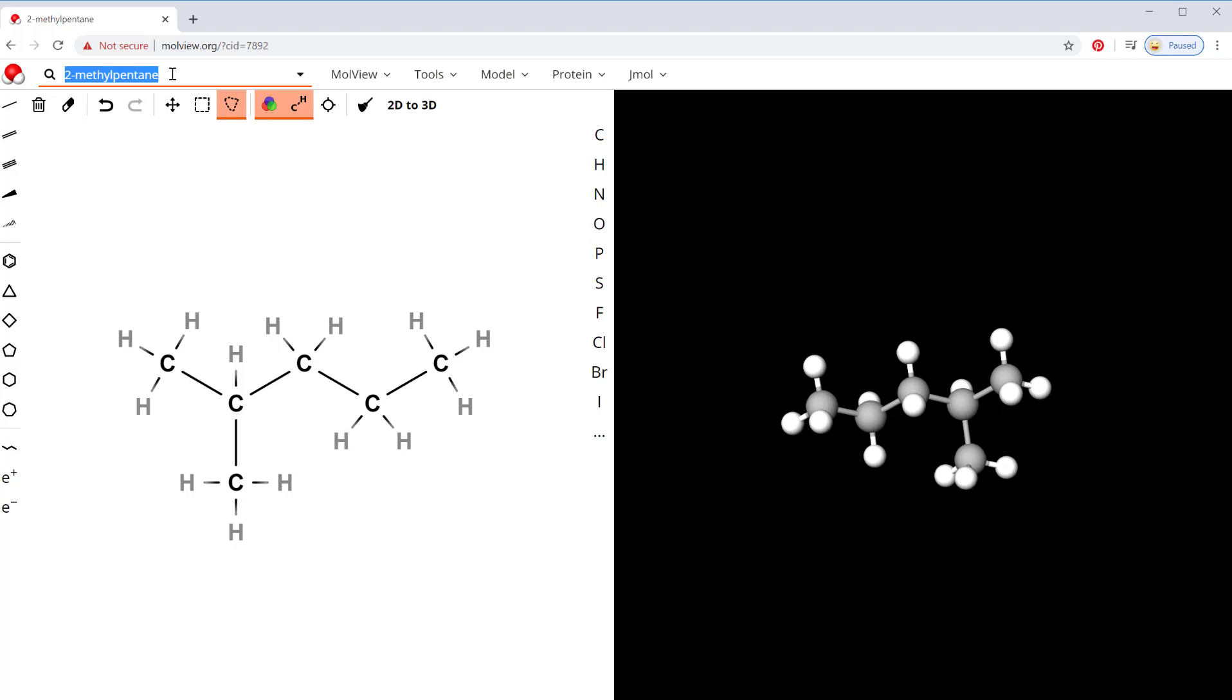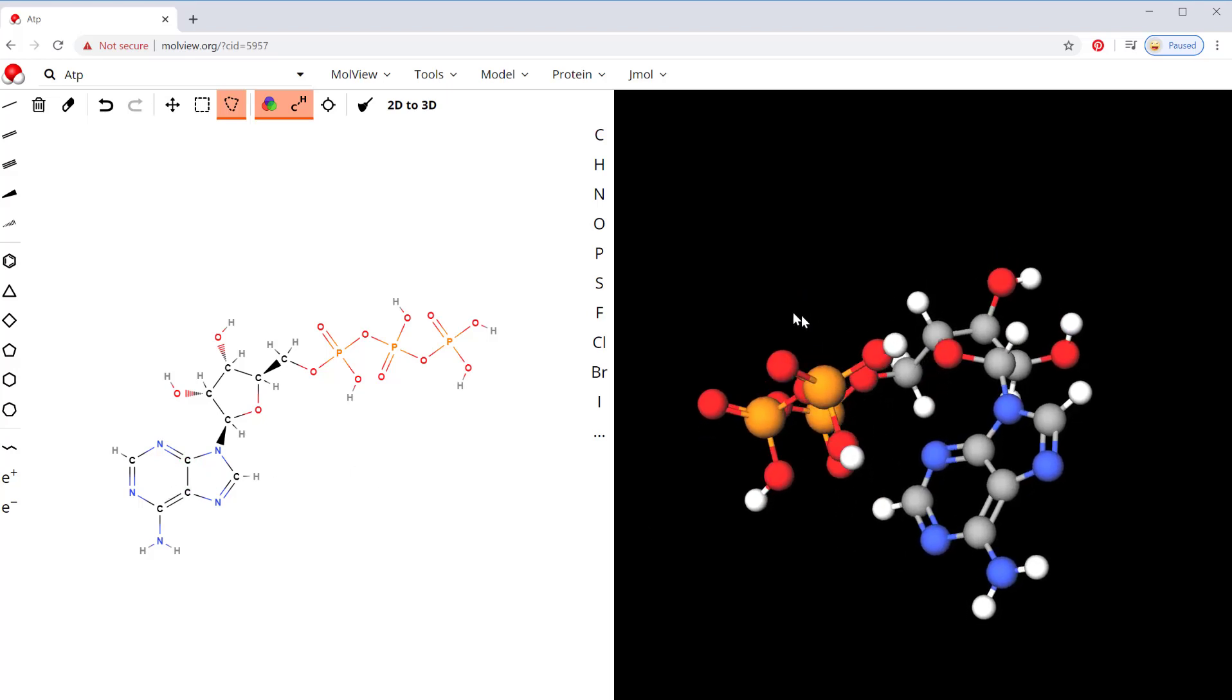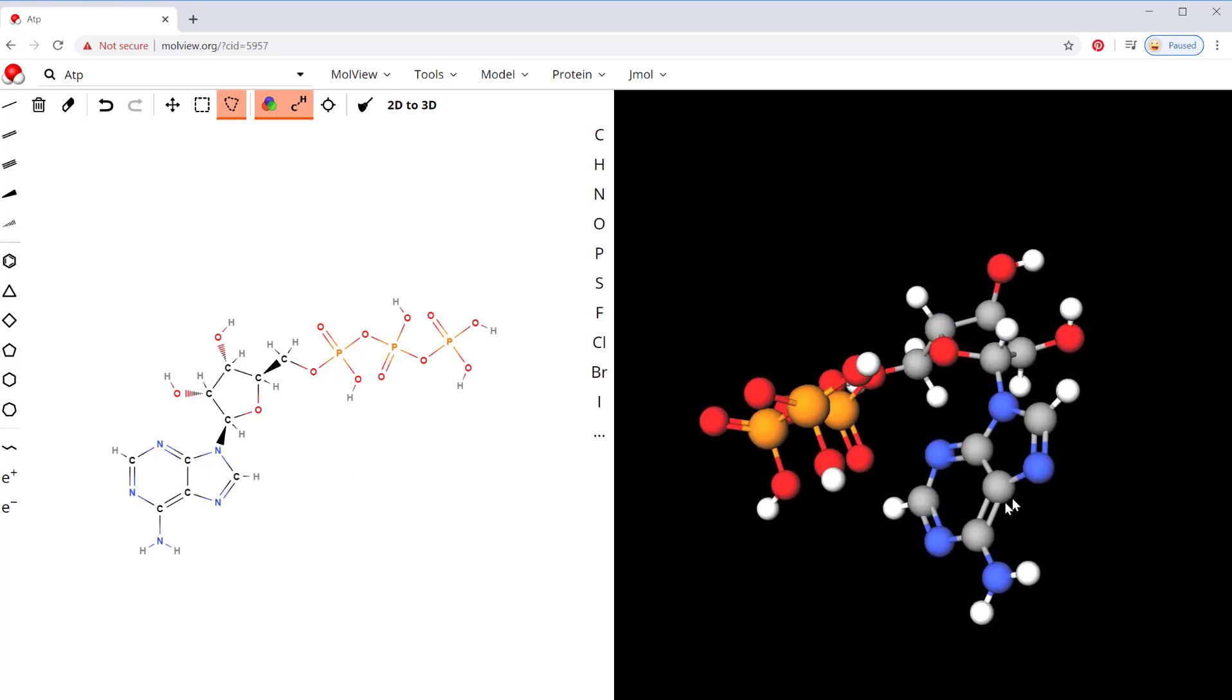Say you want to look for something bigger, like ATP. Now you get this huge expanded structure and a picture of what it would look like.